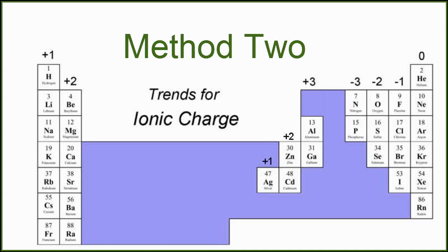So in group 15, group 5a, you might just remember that nitrogen and phosphorus have a minus 3 charge.